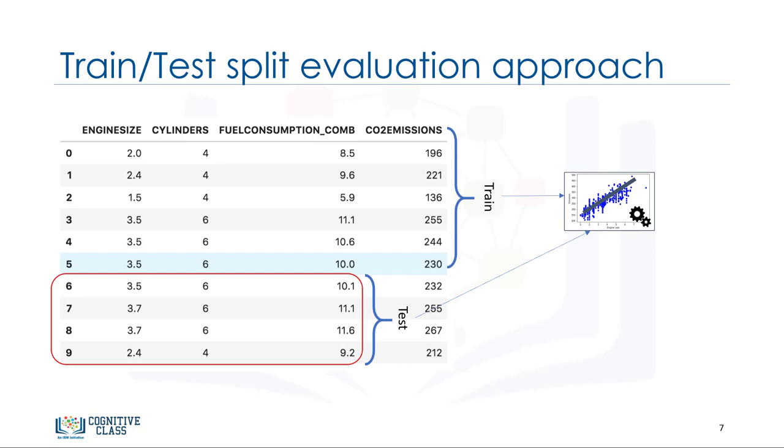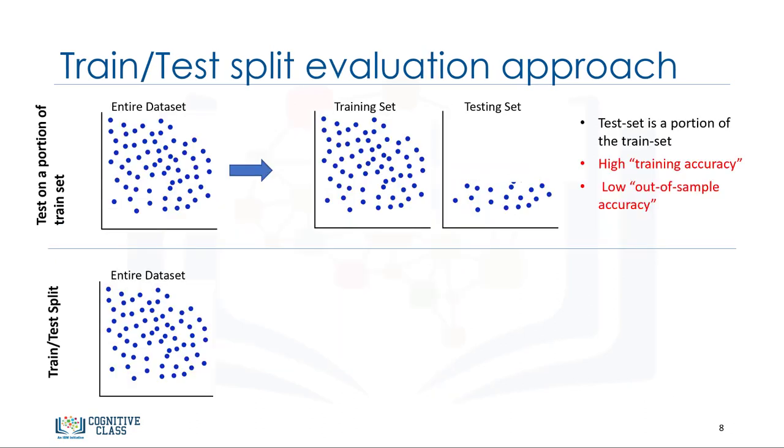And finally, the predicted values for the test set are compared with the actual values of the testing set. This second evaluation approach is called Train-Test-Split. Train-Test-Split involves splitting the data set into training and testing sets, respectively, which are mutually exclusive. After which, you train with the training set and test with the testing set.